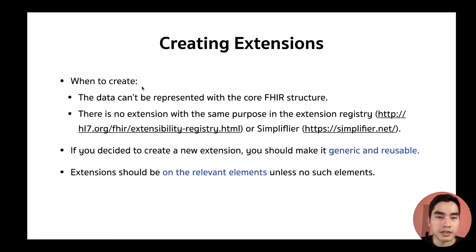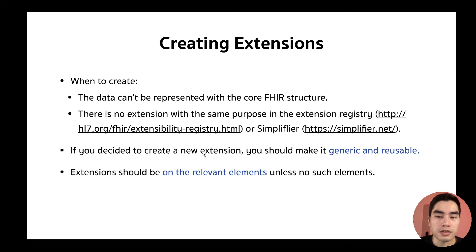About creating an extension — when should you create one? First, check the FHIR core structure and confirm you cannot represent the data using core FHIR. After that, search for an existing extension on simplifier.net or FHIR's built-in extensions. If you still cannot find an appropriate extension to use, then it might be a good time to create your own. You should make it generic and reusable so it can be reused in the future, saving time and effort.